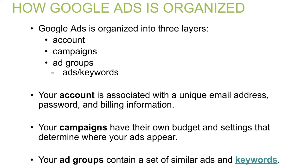Next, we're going to talk about the structure of Google Ads. Google Ads is organized in three layers: accounts, campaigns, and ad groups. Your account is associated with a unique email address, password, and billing information. For more details on this, you can watch our how-to create a Google Ads account video where we walk you through that process step by step.